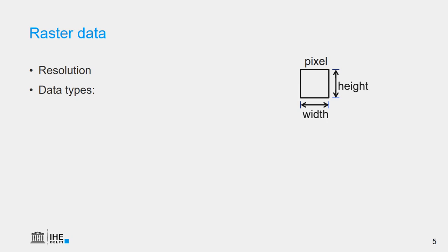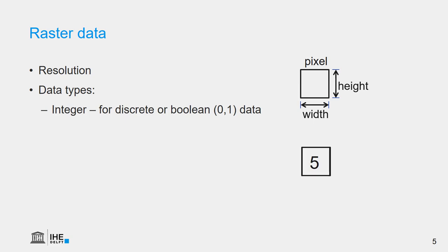Vector data has attribute tables, but raster data doesn't. We store the values in the pixel, so every cell has a value. We need to distinguish different data types. First of all, we can store whole numbers, which we call integers, and we use that for discrete or boolean data. Boolean means true-false.